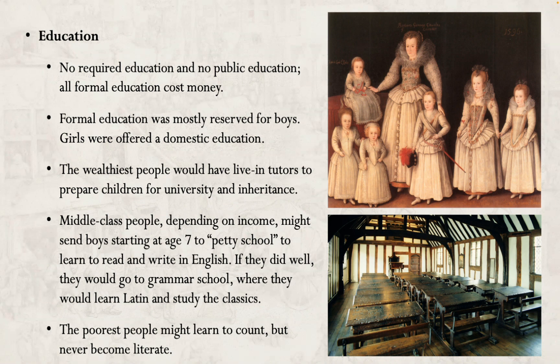Girls were generally offered a domestic education. If you were a girl who was wealthy or middle-class, you would be expected to live a domestic life in adulthood. The primary purpose and goal of a woman would be to raise children and keep a house. Their education starting around ages seven or eight would be to learn how to cook, keep a house, run a household, manage servants, and so on. Girls would sometimes learn how to read and write at a level appropriate for domestic life, and also so they could read and appreciate the Bible, which was definitely seen as important. But beyond that, more formal education was reserved for boys.